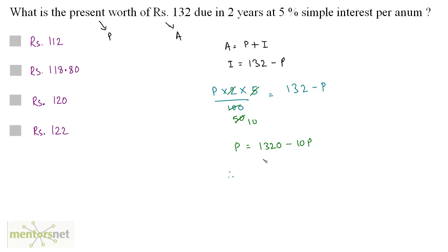So therefore, we have 10P plus P, that's 11P, equals 1320. Therefore, P equals 1320 by 11, and that equals 120. So 120 rupees is the present worth of this money, this amount. So option C is the correct answer.